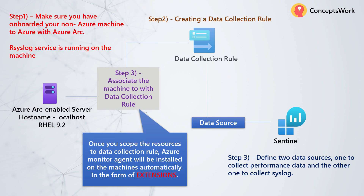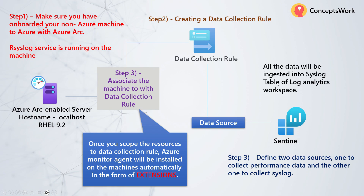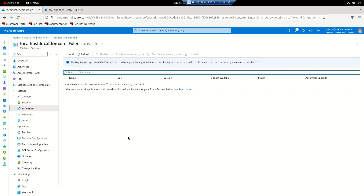Step number two is to create the data collection rule. While creating the data collection rule, I will associate the machine with my DCR. What this will result in is the installation of Azure Monitor Agent on my machine, and that agent will also be listed in the extension section on the Azure portal. While creating the DCR there is an option to choose data source, where we will select syslog and all the different facilities and their log levels. Once the DCR is created, since the machine is already onboarded to Azure, AMA agent will get installed and all the data will be ingested to the syslog table of the workspace.